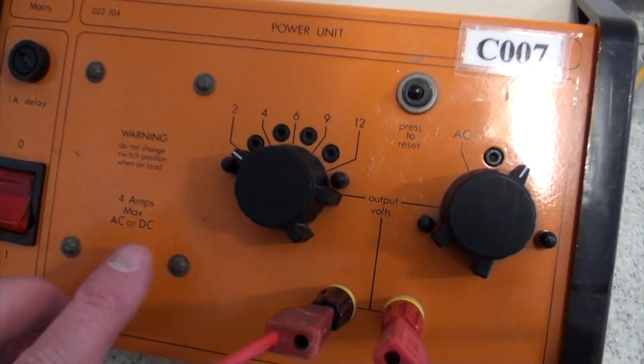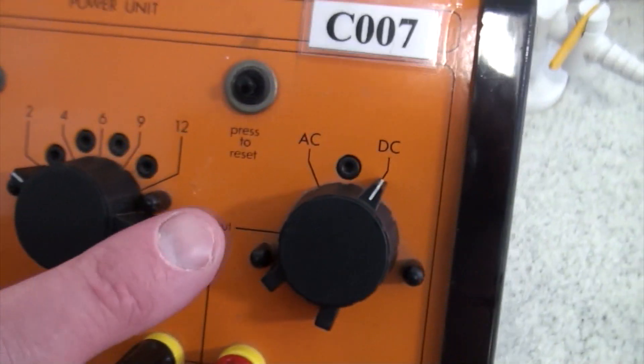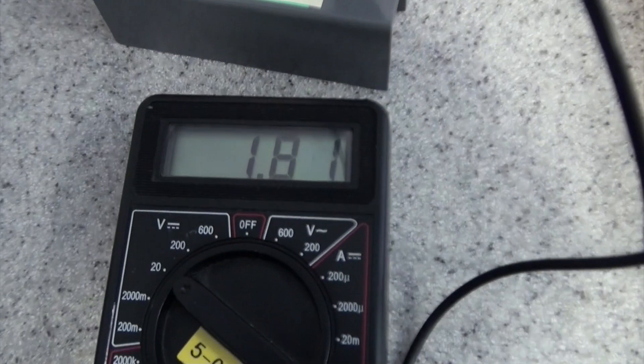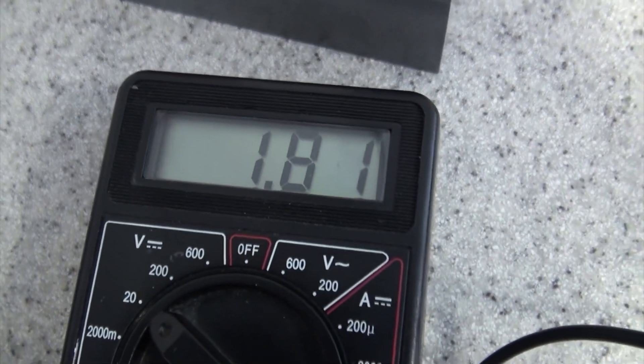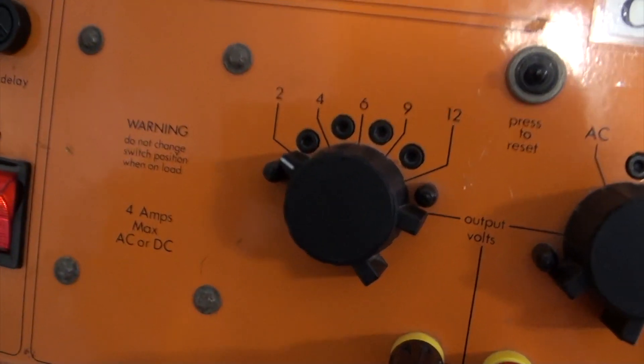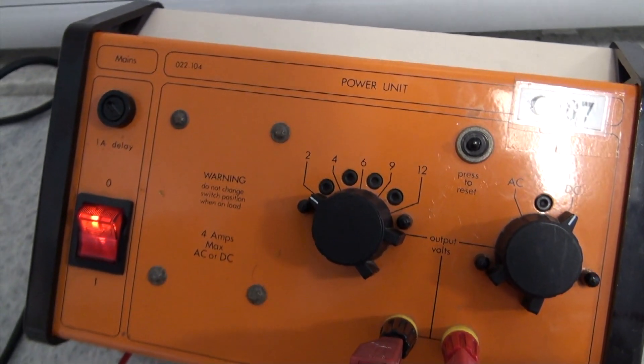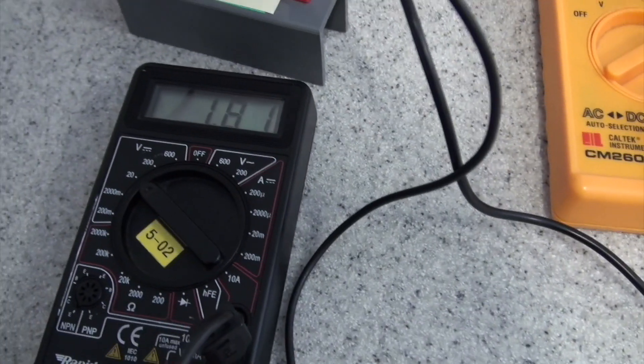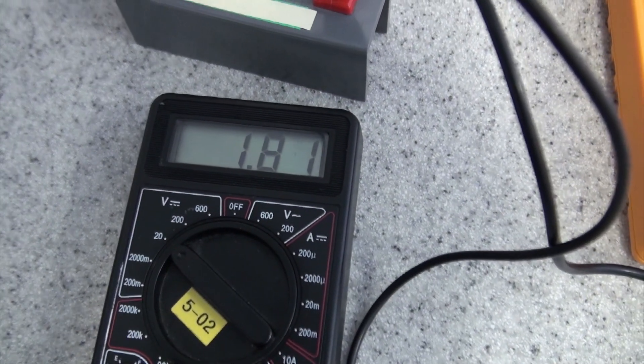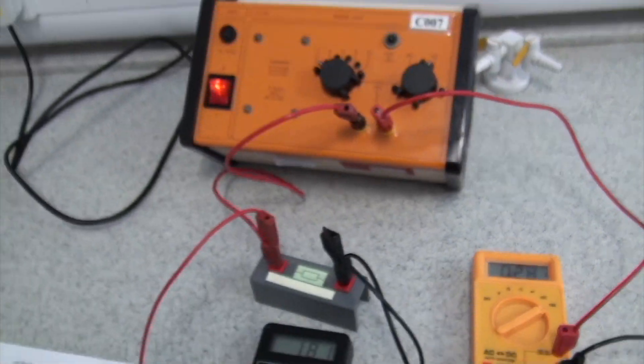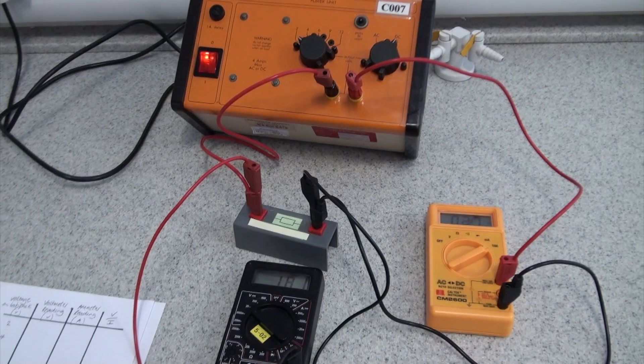Right, I'm going to turn on the lab pack. I've got it set at 2 volts DC firstly. And we'll see what we get for voltage and current. So, firstly, our voltage is 1.81. So, don't believe what you read on the power supply. Although it says 2 volts there, you don't always get 2 volts. We're getting 1.81 and our current is 0.27.